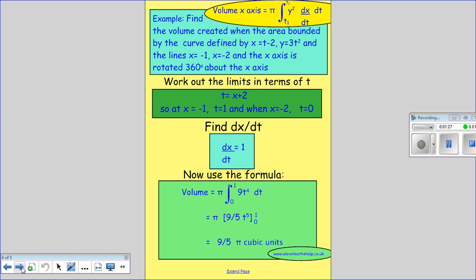So we work out the limits. We do the exact same as we did when we're finding the area under the curve: we rearrange this to give us t and substitute our different x values. When x = -1 we get t = 1, and when x = -2 we get t = 0.